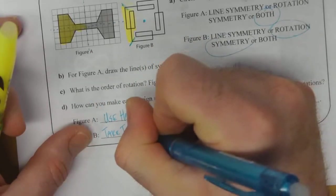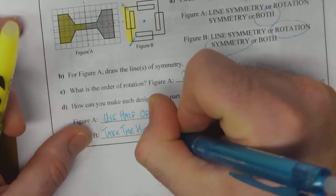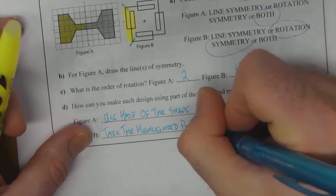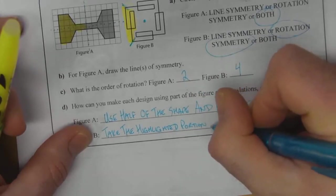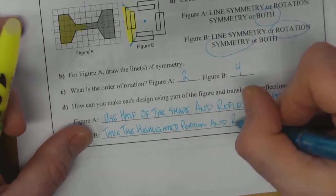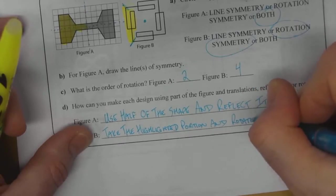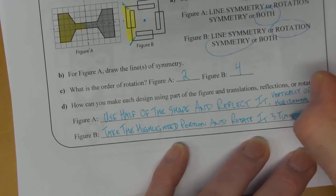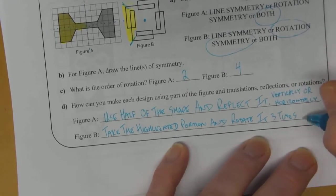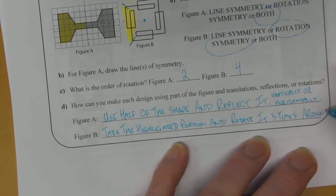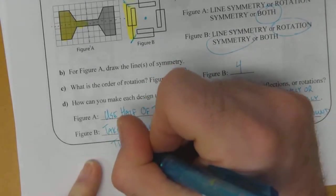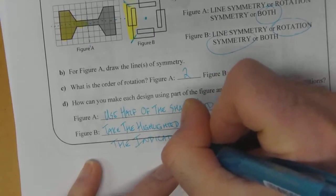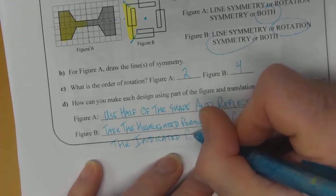Take the highlighted portion and rotate it three times around the indicated point. Actually, we'll call it center rotation.